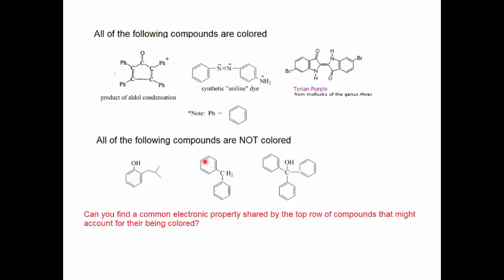So the extent of pi electron conjugation in each of these molecules is not as great as it is for the upper molecules. In general, molecules that have extended pi electron conjugation are colored or have a potential to be colored, whereas molecules that lack extended pi electron conjugation are not colored.